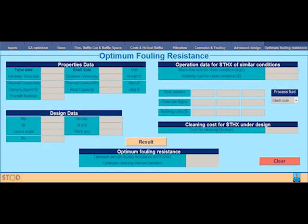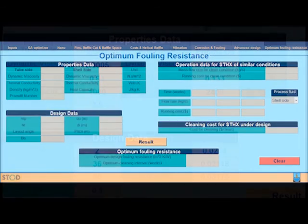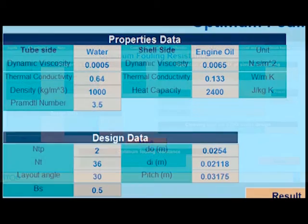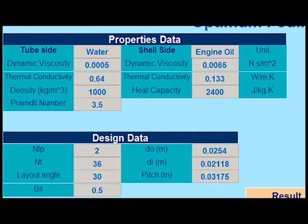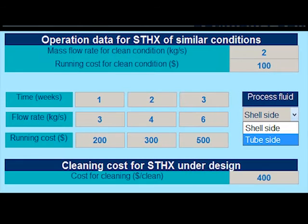The last panel is used to help the designer to get the optimum fouling resistance that should be used in his design. The inputs here are the properties of the streams and the history of the shell and tube heat exchanger in similar conditions. The output is the optimum interval of cleaning.